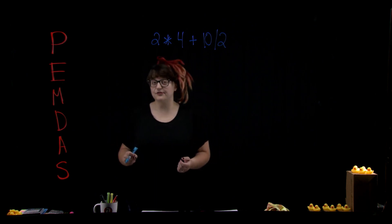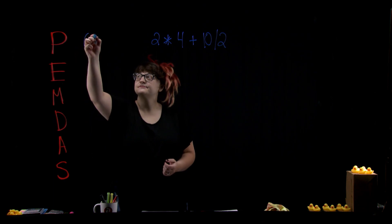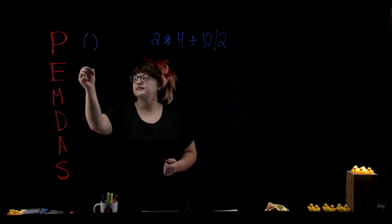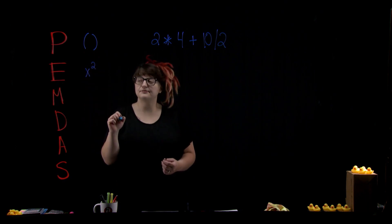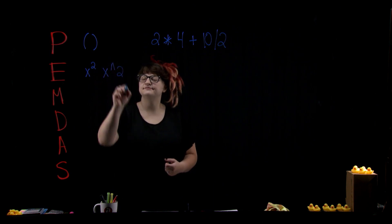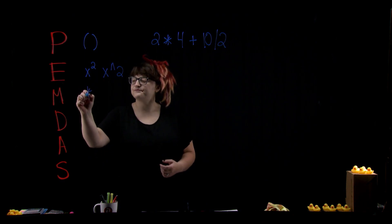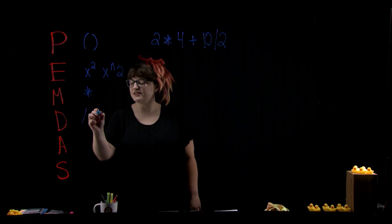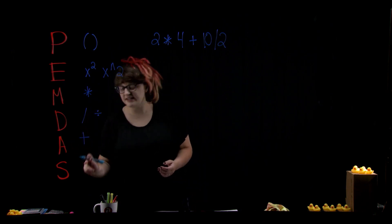PEMDAS might ring a bell for some of you. PEMDAS is the order of operations for mathematical calculations — it tells us in what order we need to address each symbol as we calculate a formula. P stands for parentheses, E for exponents (usually written as a superscript), M is for multiplication, D for division, and then addition and subtraction.